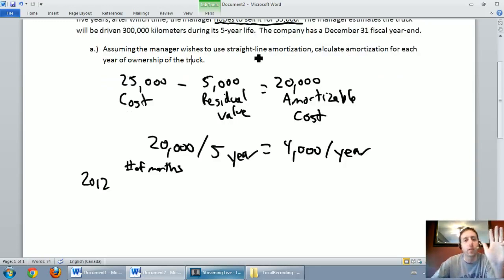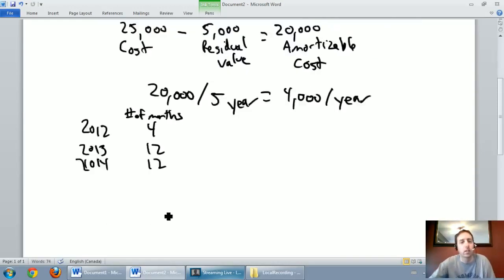We'll start in September, so September, October, November, December - we're going to own it for four months of 2012. 2013 we'll own it for a full year, 2014 it'll be a full year, 2015 it'll be a full year, 2016 it'll be a full year.